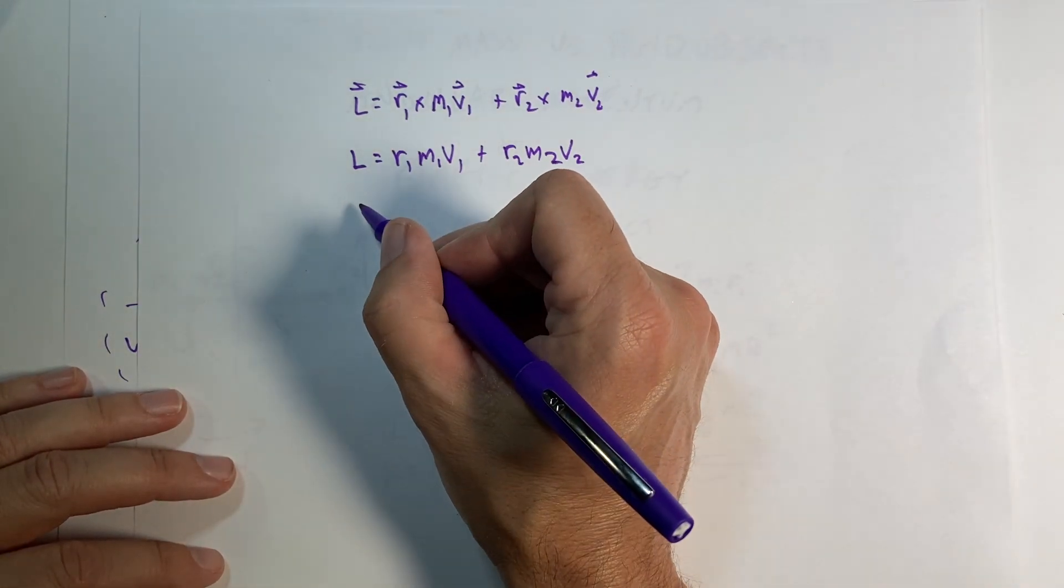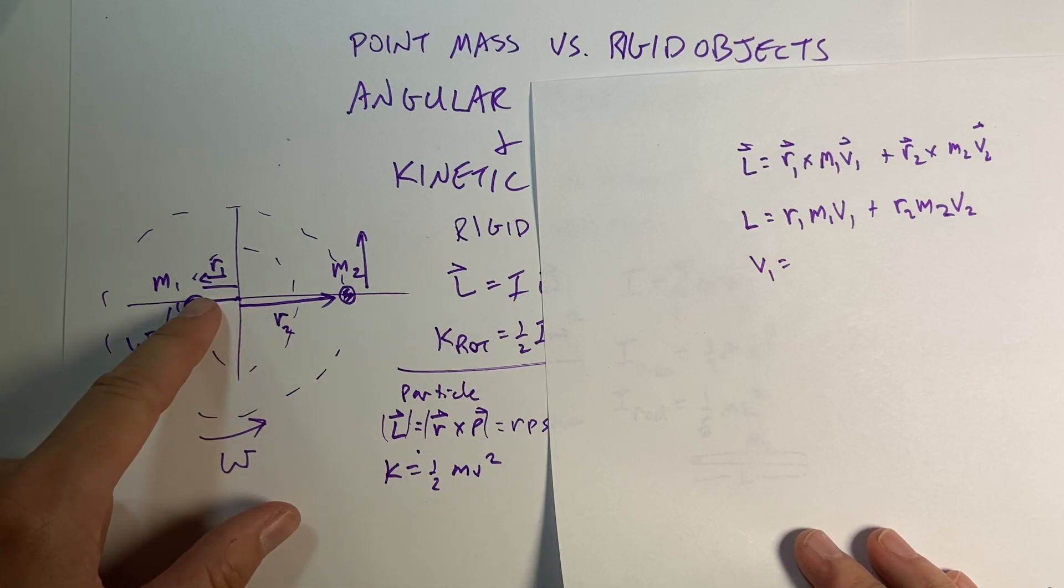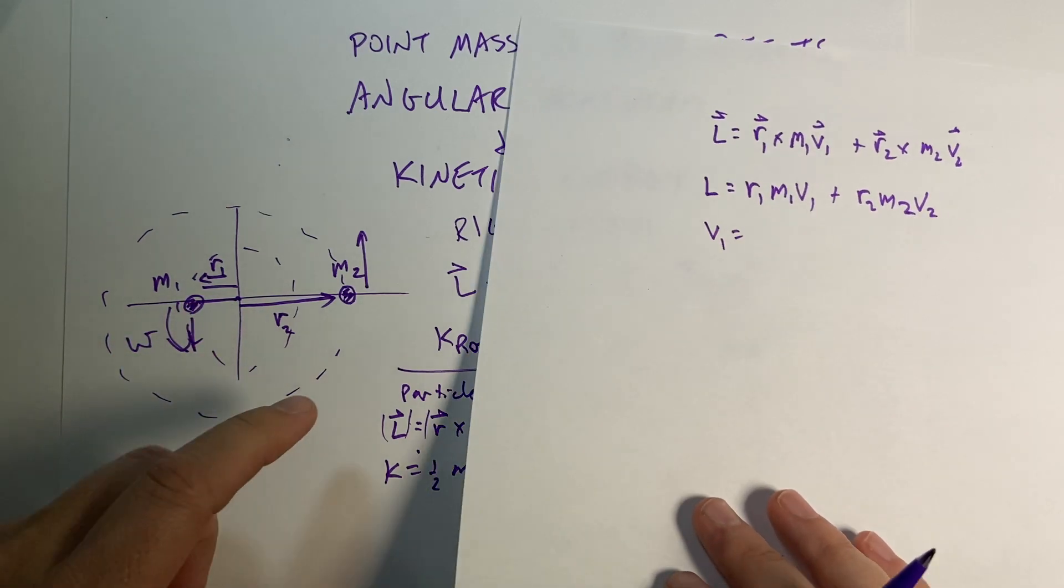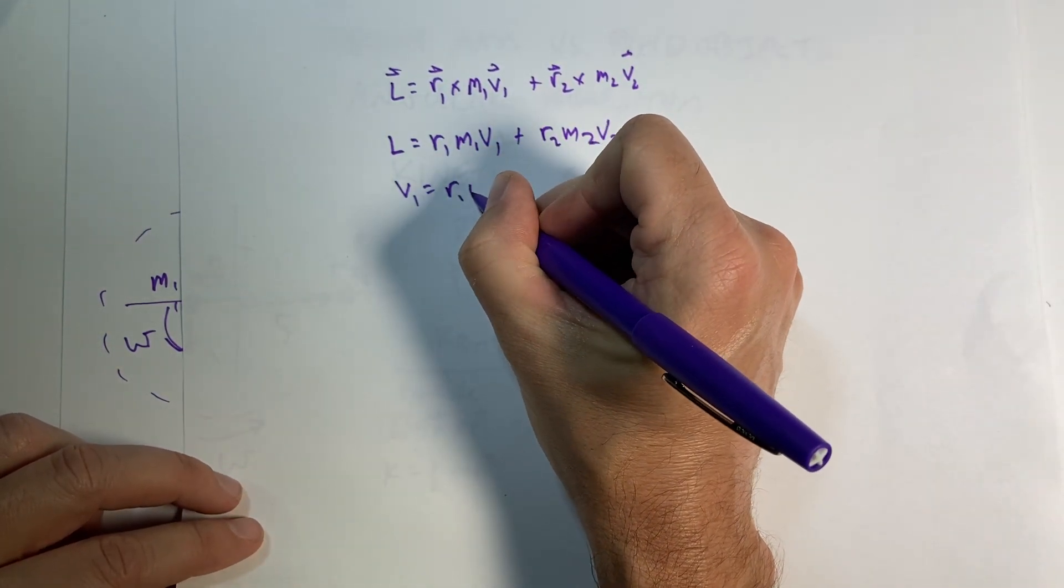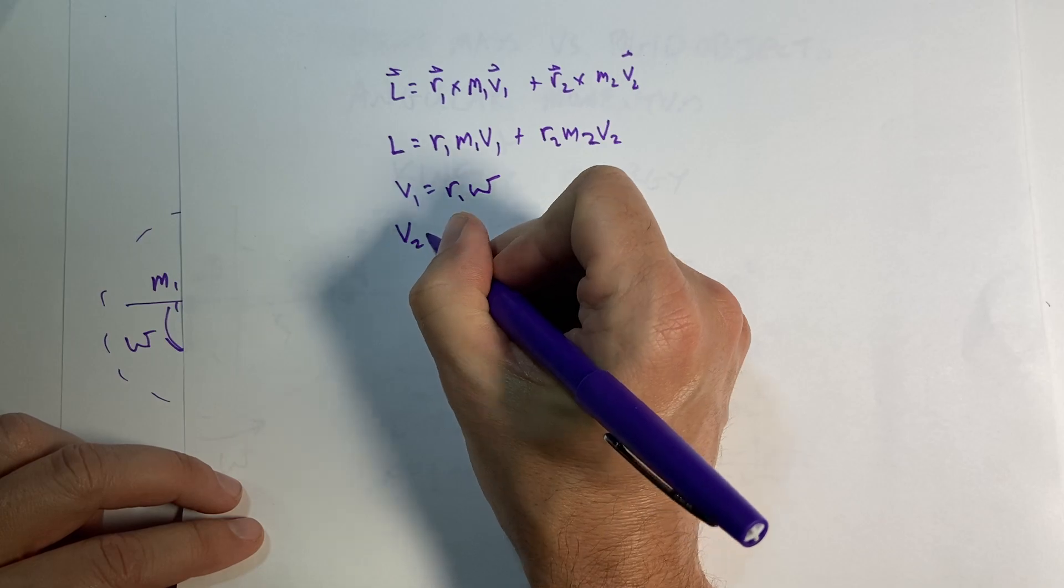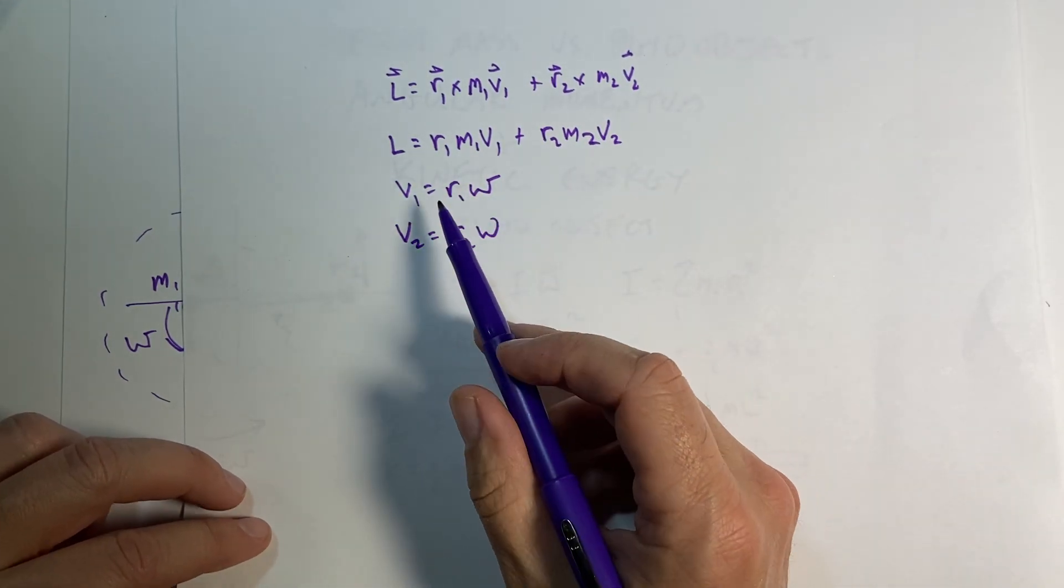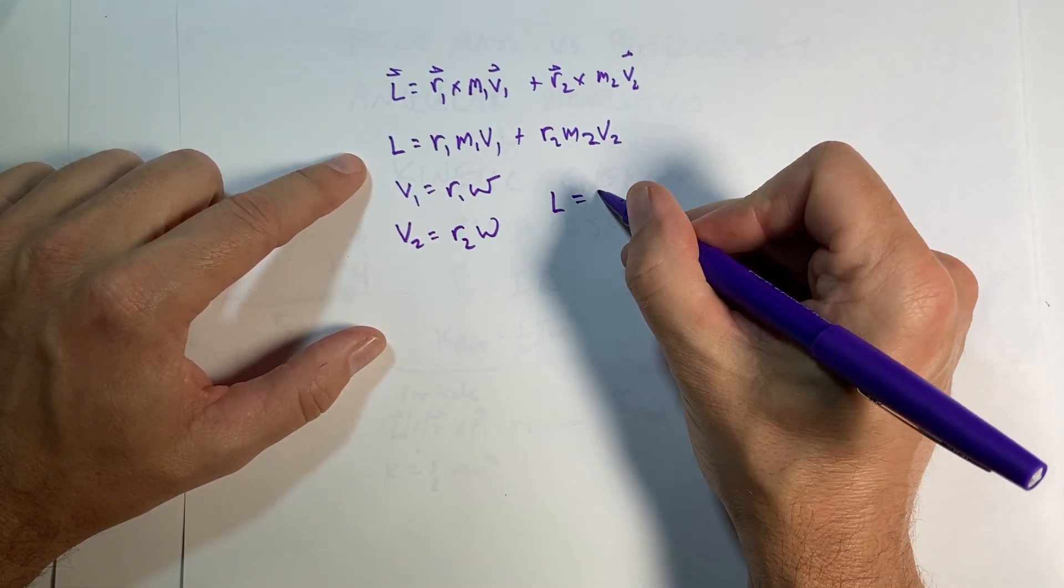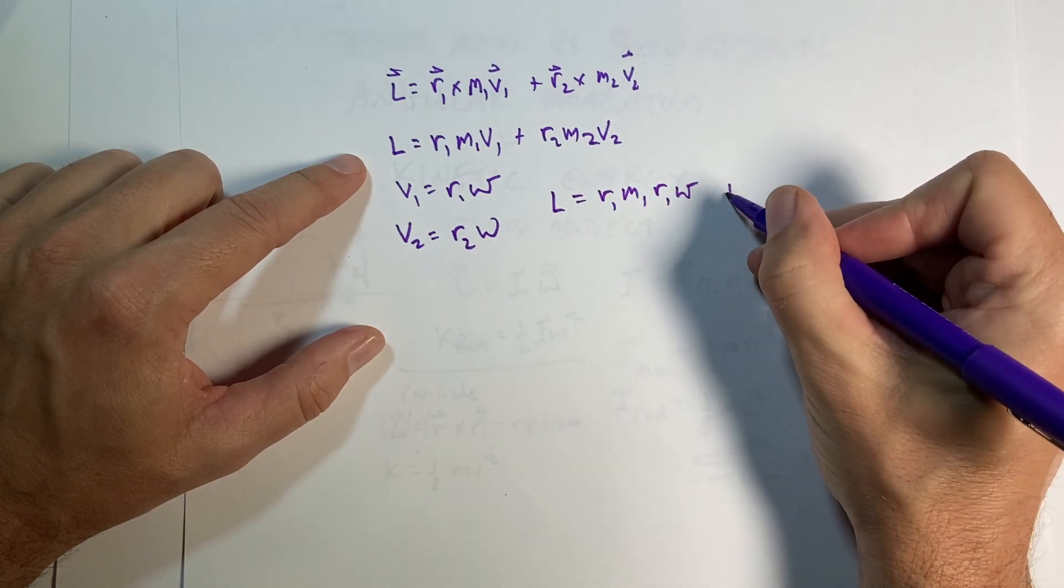Now what about v1 and v2? v1 is moving in a circle, so it's moving in a circle of radius r with an angular velocity omega. So this is going to be equal to r1 omega. v2 is r2 omega. They have the same omega.